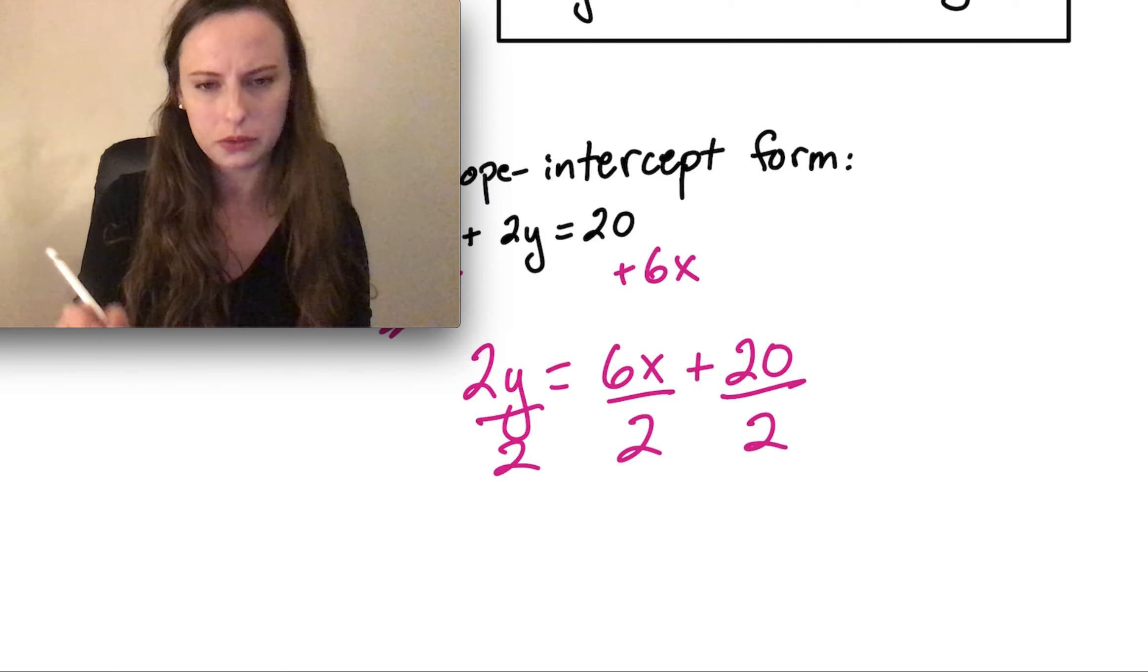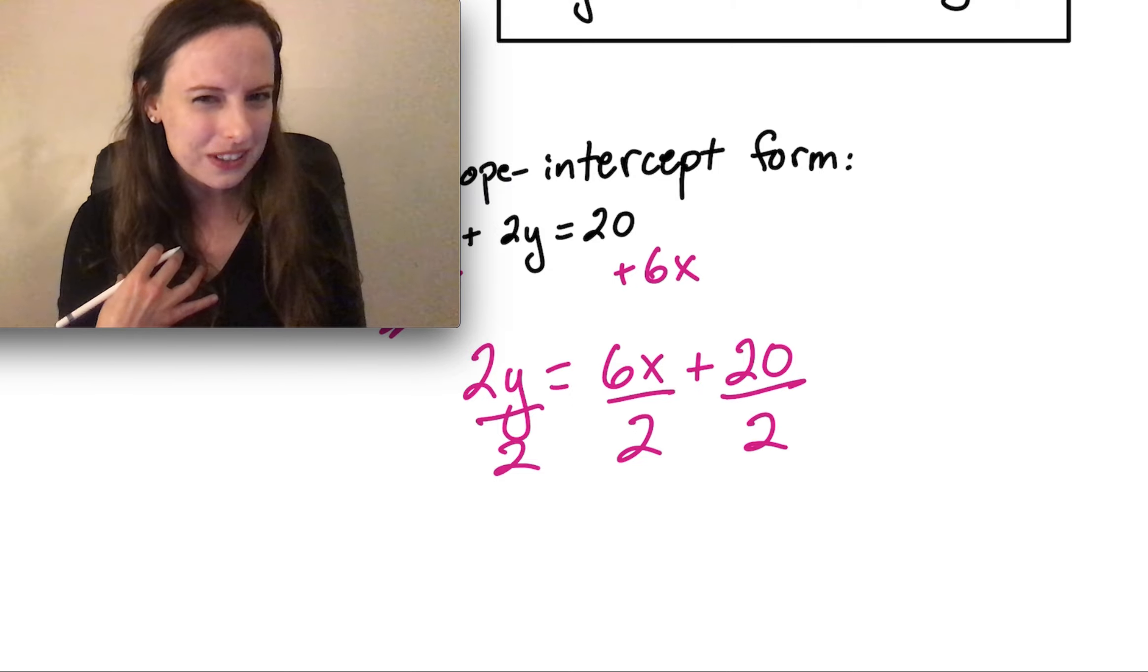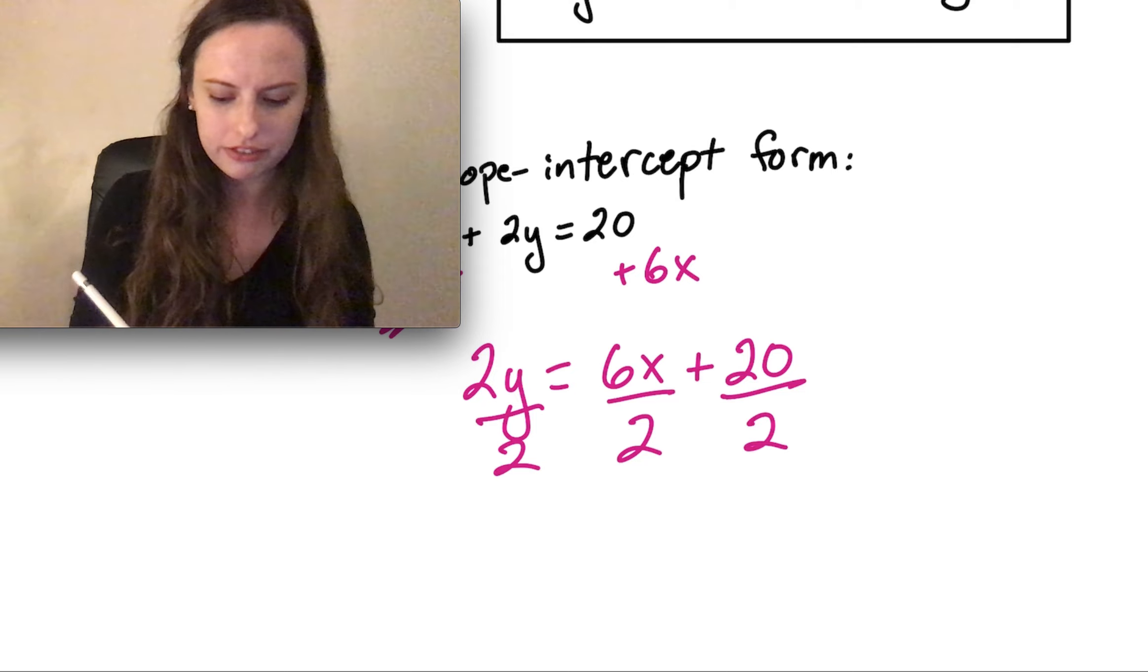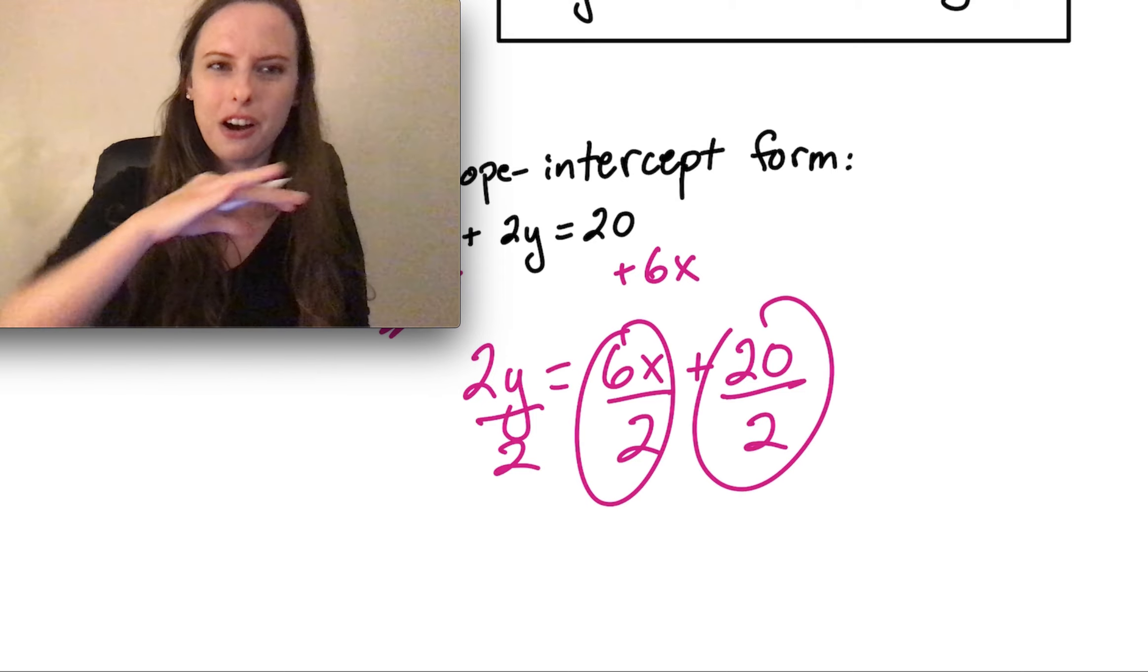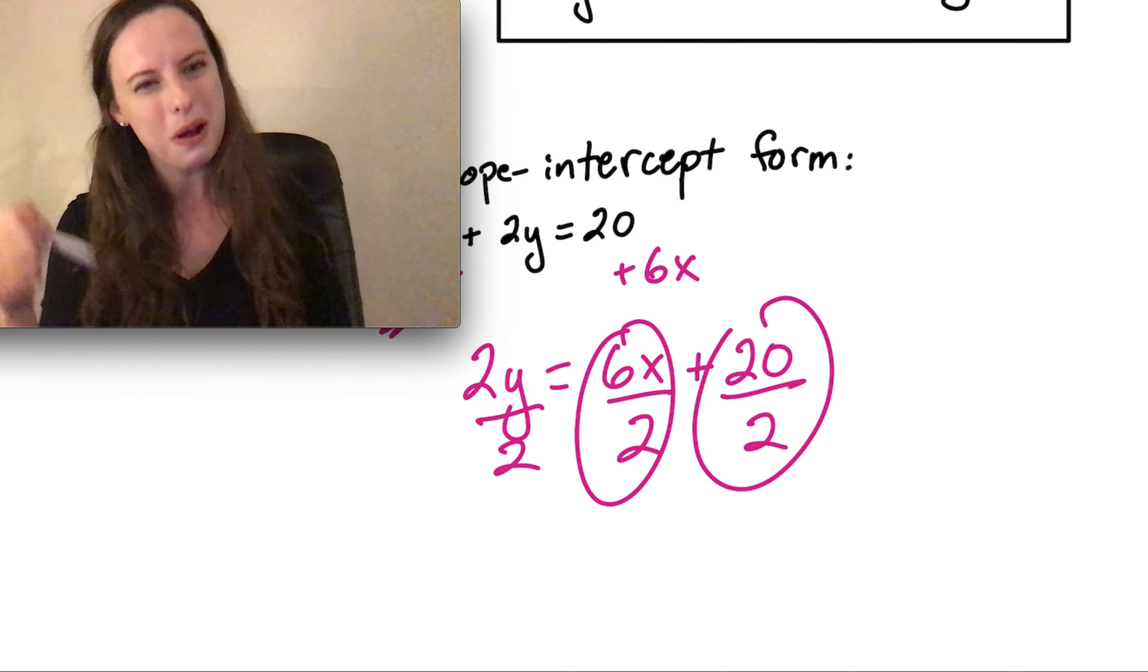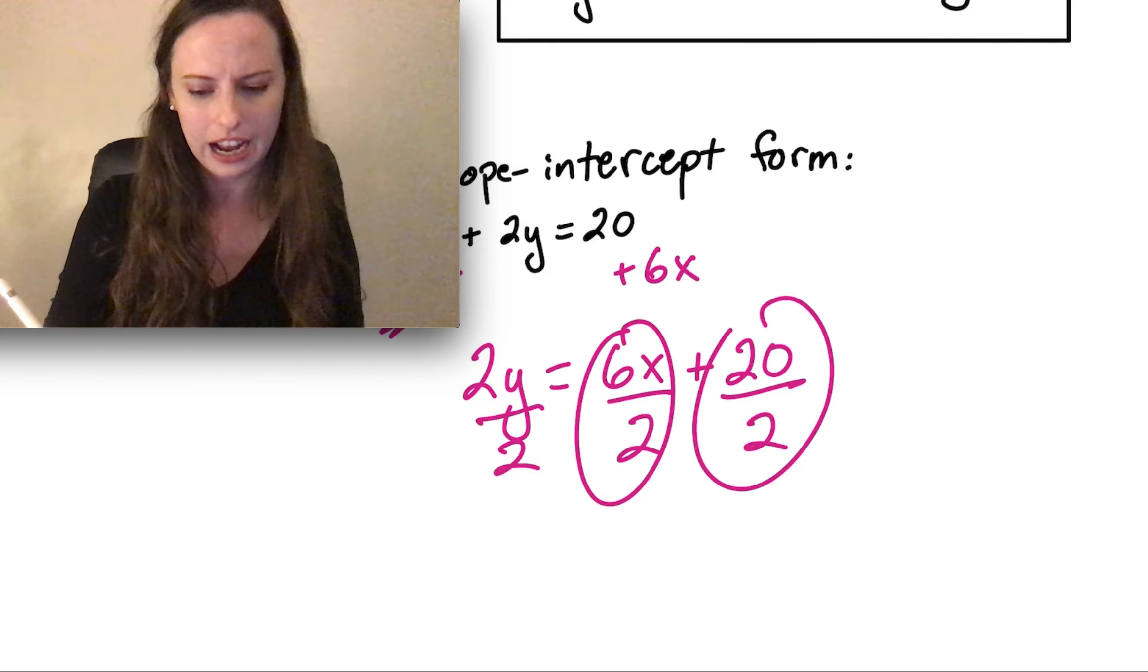And then 20 is a term. I can divide that one by 2 as well. I prefer this method because that reminds me to divide every term on that side of the equation by that 2, so I don't forget or leave anything out.